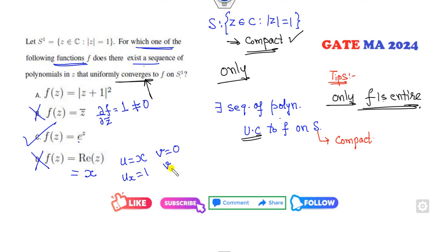z plus one whole squared is not an entire function, so the right answer is only C is the correct answer.